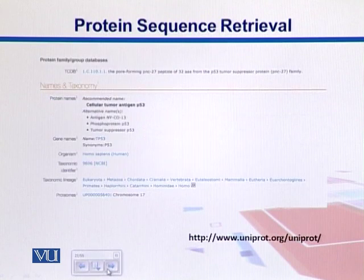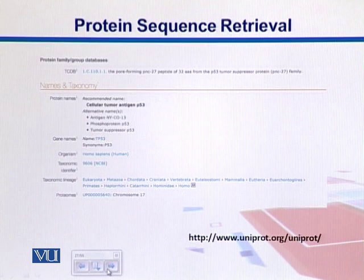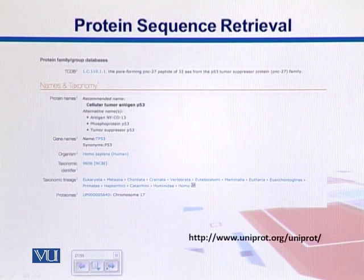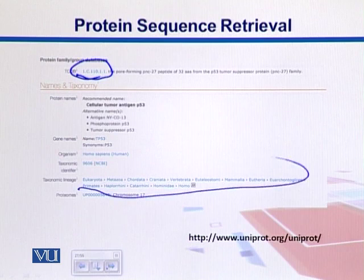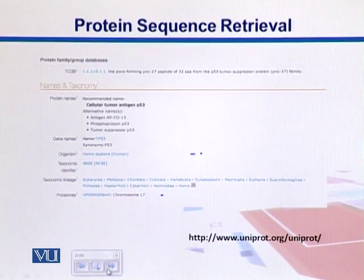Moving further, we reach its taxonomy. At the top part there is something written as protein family. The TCDB database classifies proteins on the basis of being transporter proteins — associated with transport across membranes — and a five-digit classification code is assigned to each protein. Then we have protein names and taxonomy showing the classification of the organism from which the protein is coming.